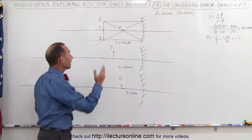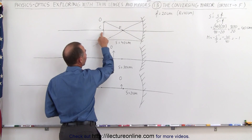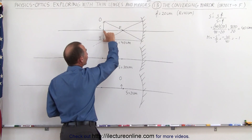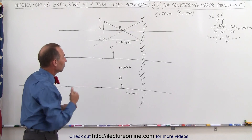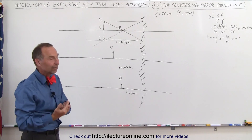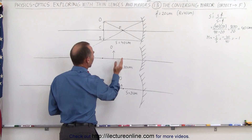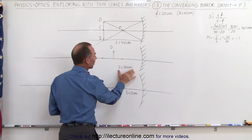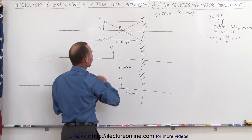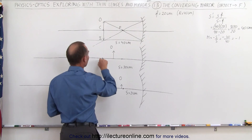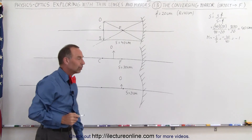We already saw that in the last video: when you place the object at the center of curvature, the image will form at the center of curvature. It will be the same size as the object, but inverted — a real image at the same location, but inverted, so the magnification would be negative 1. Now let's move the object in between the center of curvature and the focal point, at a distance of 30 centimeters, assuming the focal length is 20 centimeters and the center of curvature is 40 centimeters. Here's the center of curvature, here's the focal point, and we place the object right in between the two.